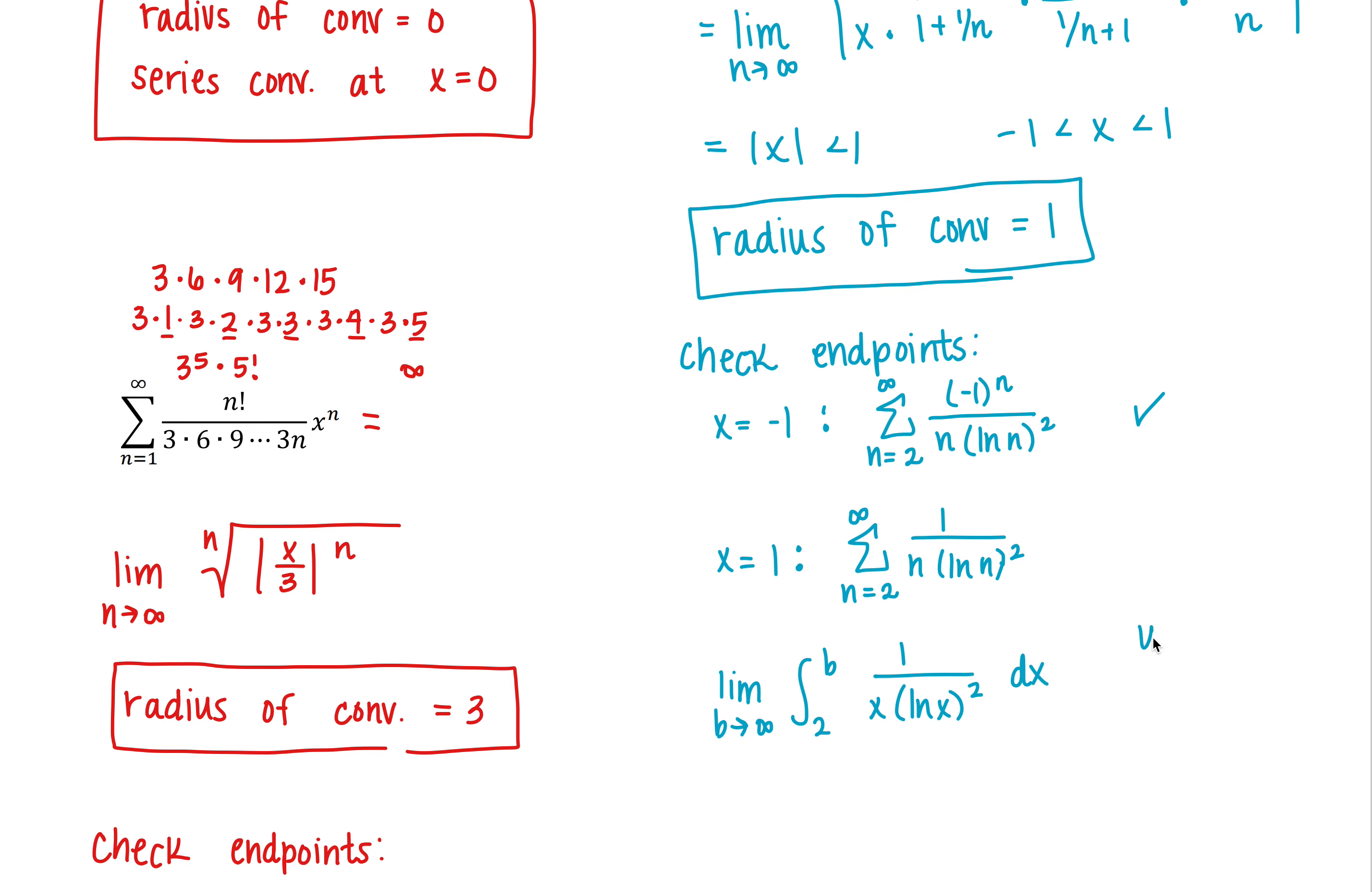If we let u equal the natural log of x, then du is 1 over x dx. So this would become the limit as b approaches infinity of the natural log of 2 to b. And we'd have u to the negative second, because it'd be 1 over u squared times du. And we can easily integrate that. It's going to work. So the series is also going to converge at x equals 1.